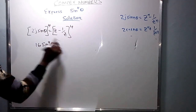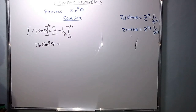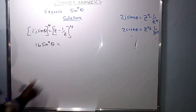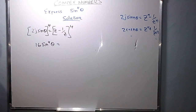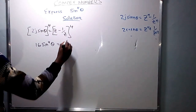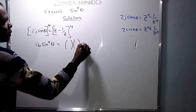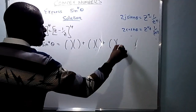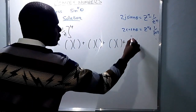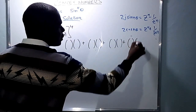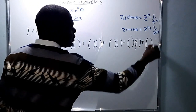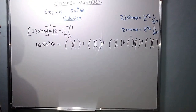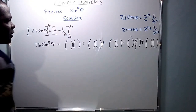On the right hand side, we have a binomial expansion. When n is raised to the power 4, it implies 5 terms. So we have the first term plus the second term plus the third term plus the fourth term plus the fifth term. The first bracket is z and the second bracket is negative 1 over z.